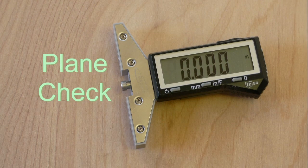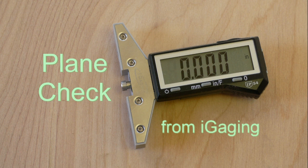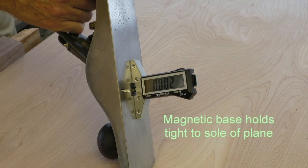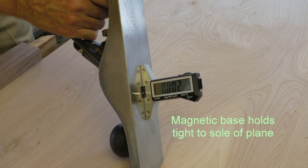Introducing PlaneCheck, the latest precision measuring tool from iGauging, the leader in innovative, affordable digital tools. PlaneCheck takes the guesswork out of setting plane irons, and it's handy when setting joiner knives, too.